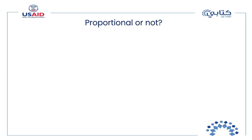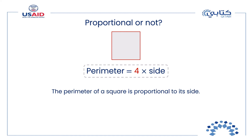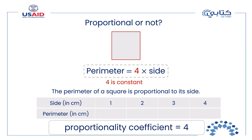How about checking proportionality in geometry? Here's a square. The perimeter of a square equals 4 times the length of one of its sides. Can we say the perimeter is proportional to the side length? Yes — we multiply the side by the constant 4. The perimeter of a square is proportional to the length of its side, and the proportionality coefficient is 4.